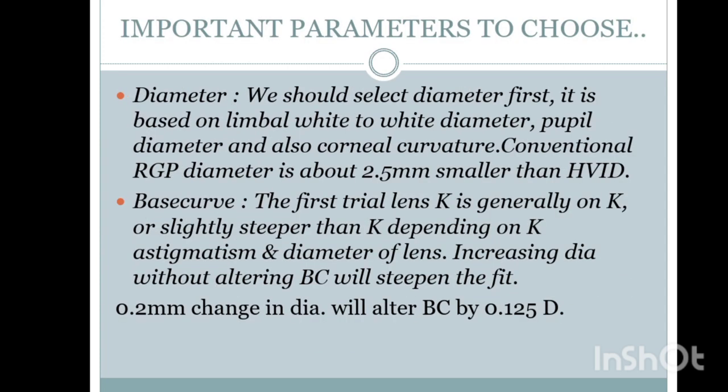We should select the diameter first. It is based on the limbal diameter, pupil diameter, and also corneal curvature. Conventional RGP diameter is about 2.5 mm smaller than the HVID — the horizontal visible iris diameter, measured with the Sharma steeper scale. Take the diameter 2.5 mm smaller than the HVID.